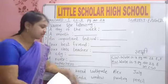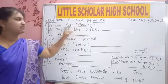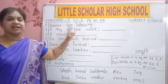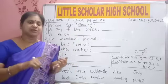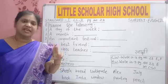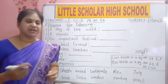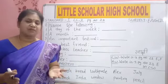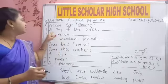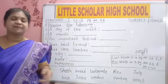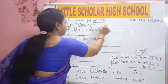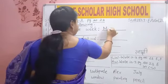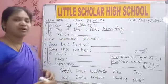Open your test book, page number 23. Listen — 'Name the following'. Sentences are given; we will read the sentence and write the name. A day of the week — all days have a name: Monday, Tuesday, Wednesday, Thursday. Monday is the first day. If we say only 'day', it is common, but if we say 'Monday', it is special. Here we will write Monday: M-O-N-D-A-Y. Monday.